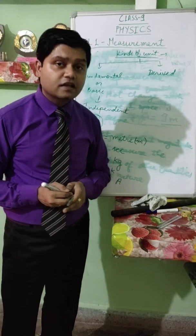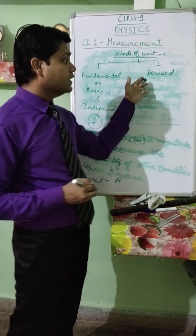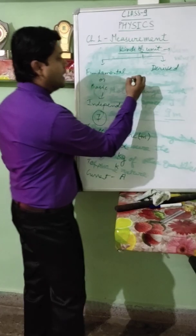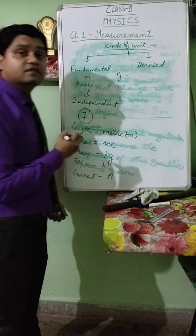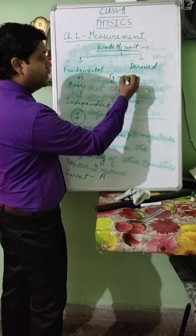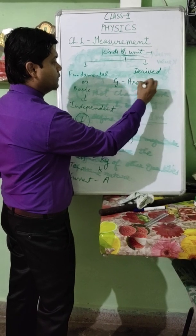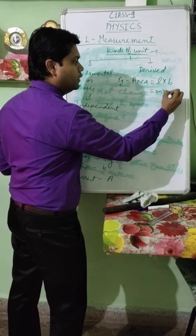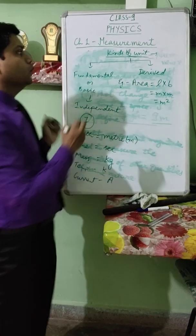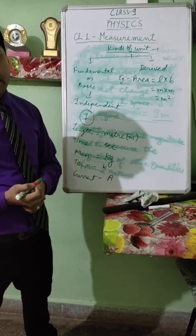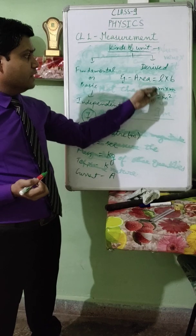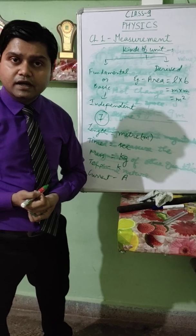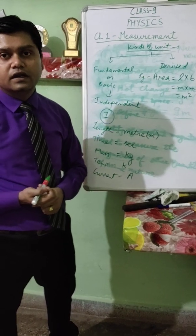Derived units are those which need derivation — we take the help of fundamental quantities. For example, to find the standard unit of area: area equals length into breadth, which is metre into metre, so metre squared is the standard unit of area. We have used the formula and the fundamental units to find this out. Therefore, area falls in the category of derived units.